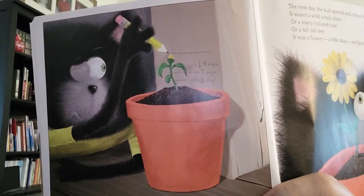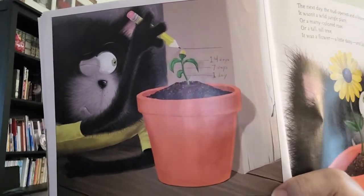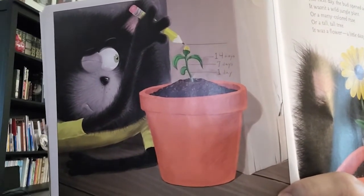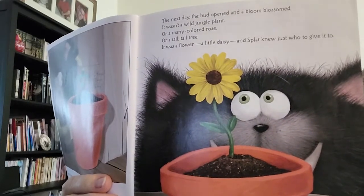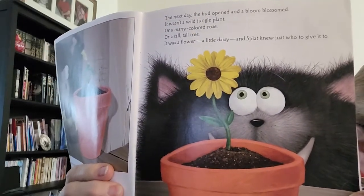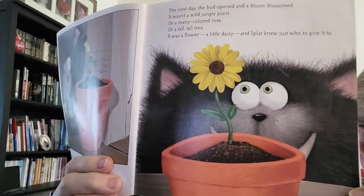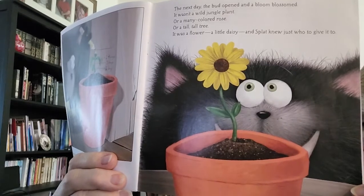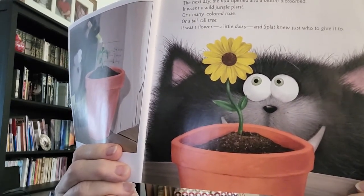During the next week, the sprout grew a few straggly leaves. Splat was thrilled when a few days later, a little bud appeared atop the stem. The next day, the bud opened and a bloom blossomed. It wasn't a wild jungle plant or a many-colored rose or a tall, tall tree. It was a flower, a little daisy, and Splat knew just who to give it to.